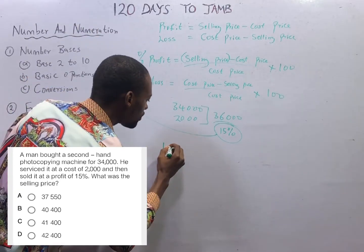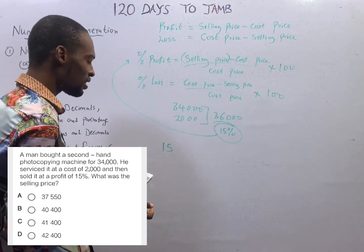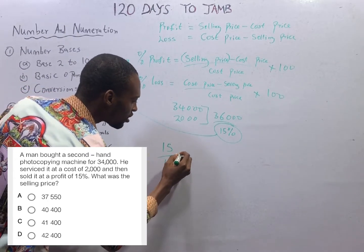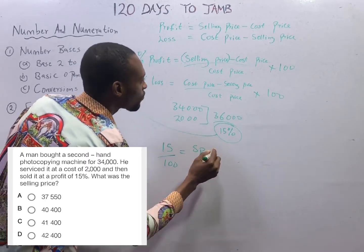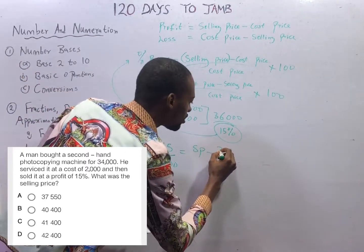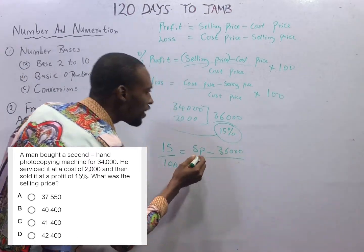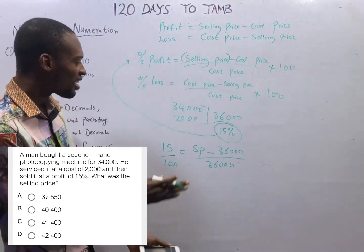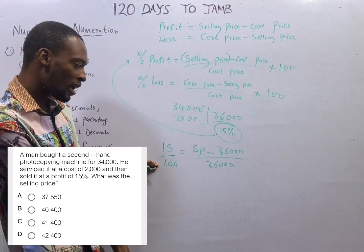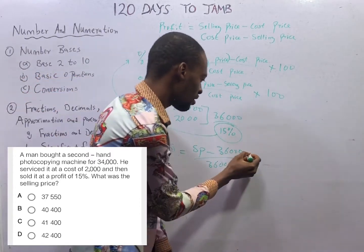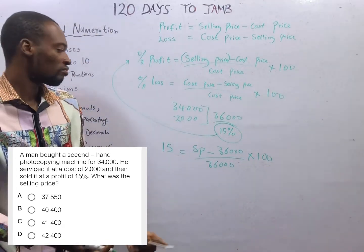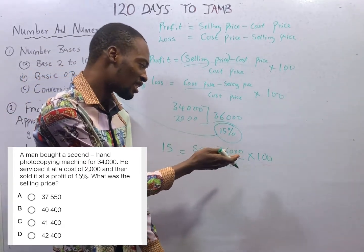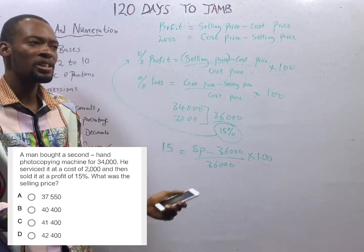Percentage profit is 15. Remember, percentage speaks for 15 over 100. So either you say 15 over 100 equals selling price (SP) minus cost price 36,000, over cost price 36,000 — or instead of representing 15% as 15 over 100, you can say times 100. They are the same. So 15 equals selling price minus 36,000, over 36,000, times 100. Anyhow you do it is correct.